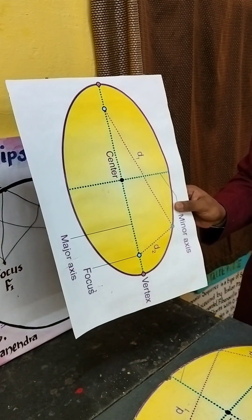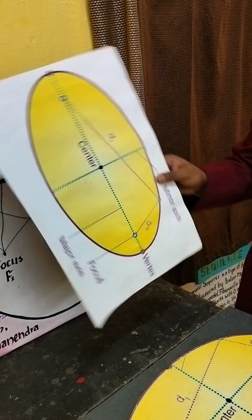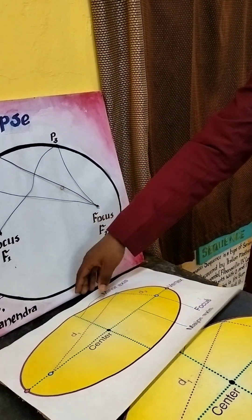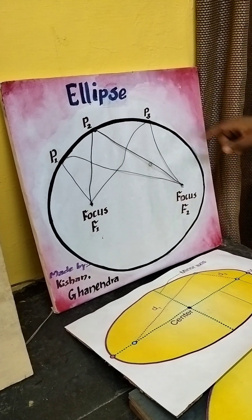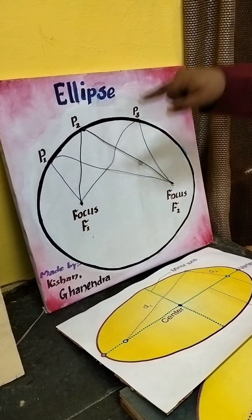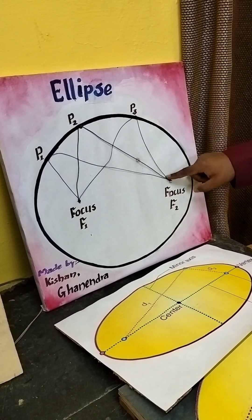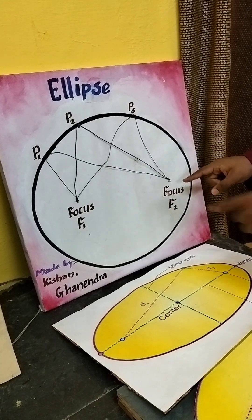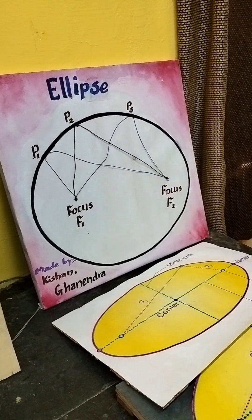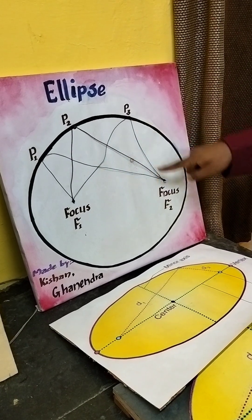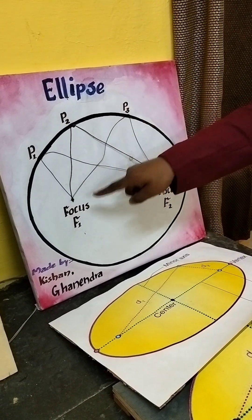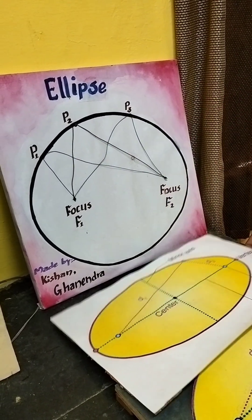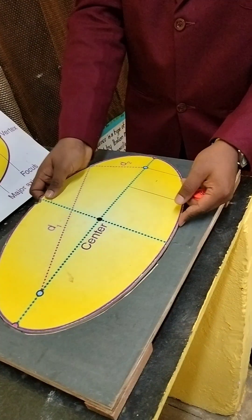We will talk about this property of an ellipse: if we choose any point on the locus of the ellipse and draw line segments to the foci of the ellipse, the sum of these line segments always remains constant. I will try to illustrate this with this activity.